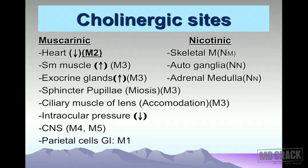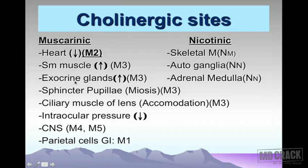Muscarinic receptor sites are very important. Have a look at this slide. The first important site is the heart. Next is smooth muscle in the genitourinary system, respiratory system, and gastrointestinal tract. Then you have exocrine glands, the sphincter pupillary muscle responsible for miosis, and the ciliary muscle of the lens, which is concerned with accommodation.